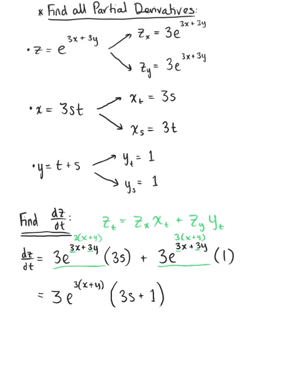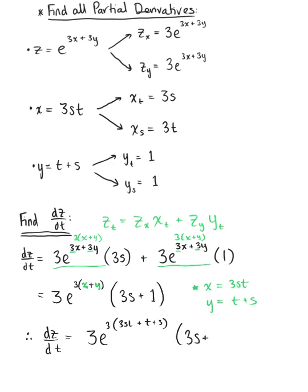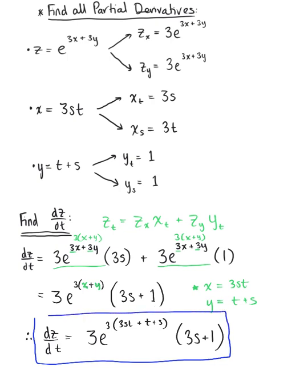We're ready for substitution. We were given that x equals 3st and y equals t plus s. So our final answer for the derivative of z with respect to t is 3 times e raised to the 3 times (3st plus t plus s), all multiplied by 3s plus 1.